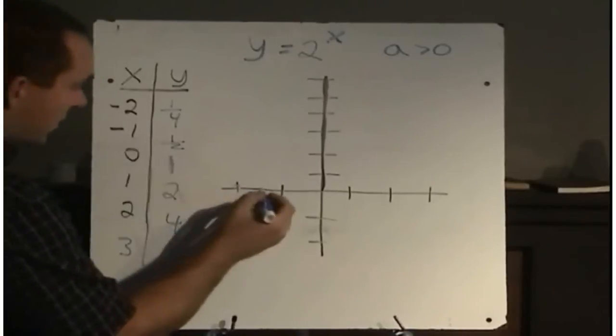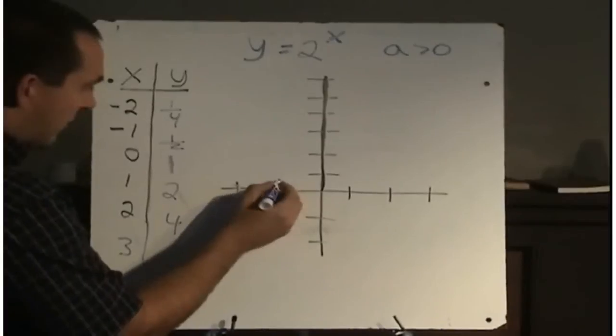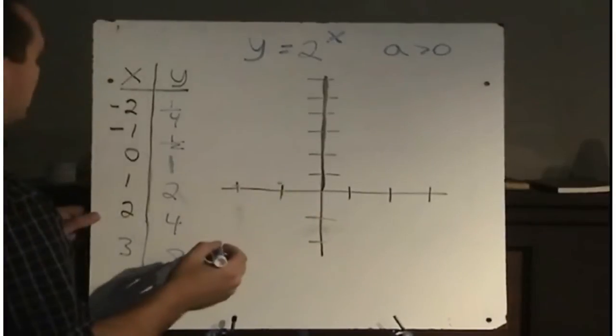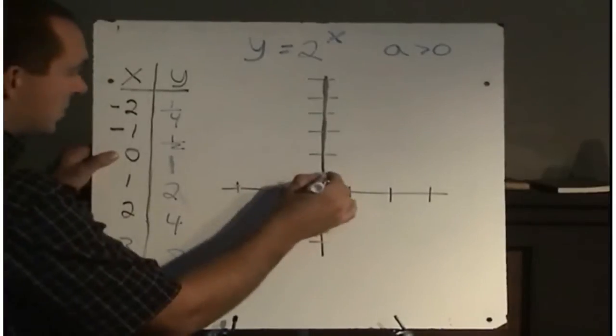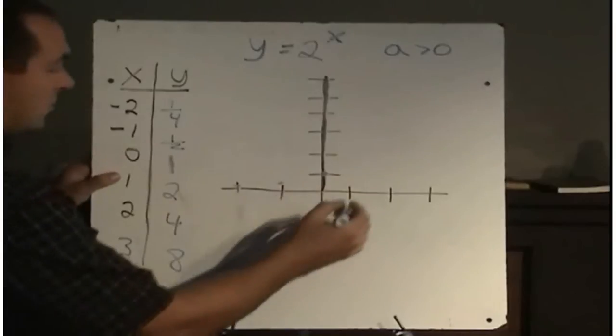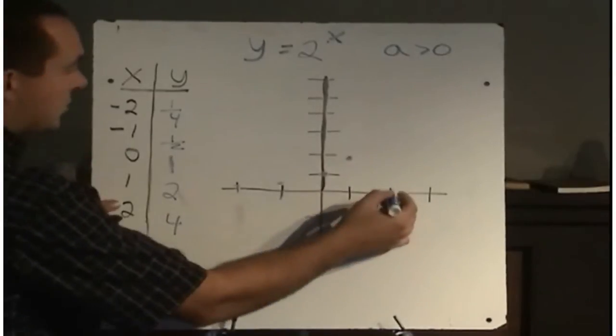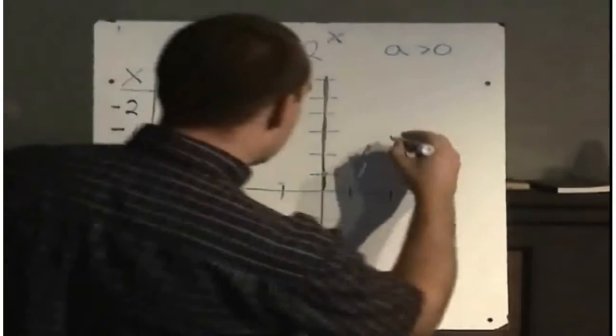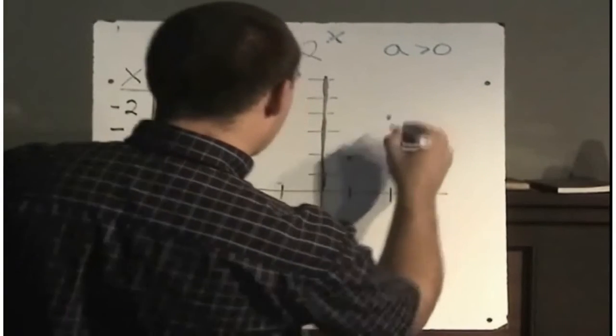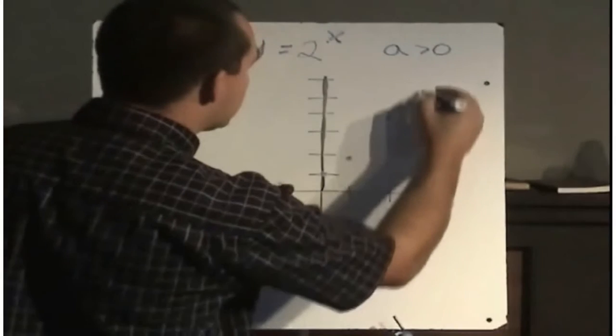When x was negative 1, our y value is up to 1 half. We get a point here. When x is 0, y was 1. When x was 1, y was 2. When x is 2, y was 4. And when x is 3, y is 8.